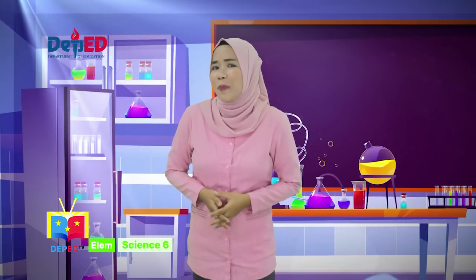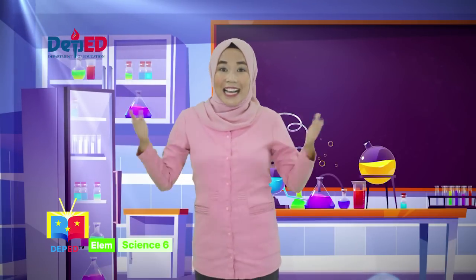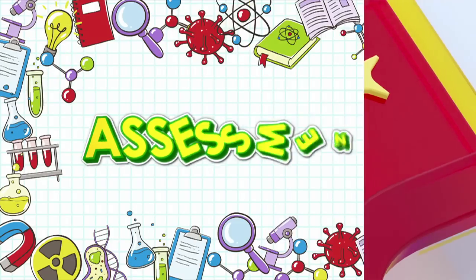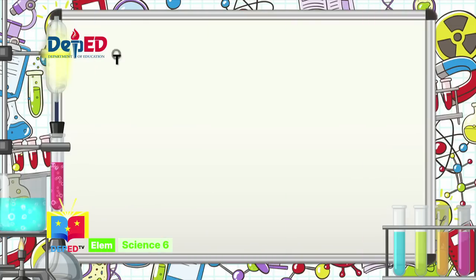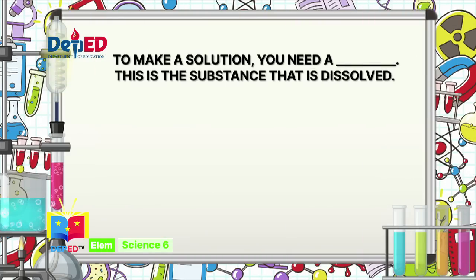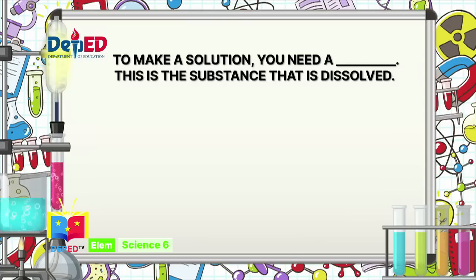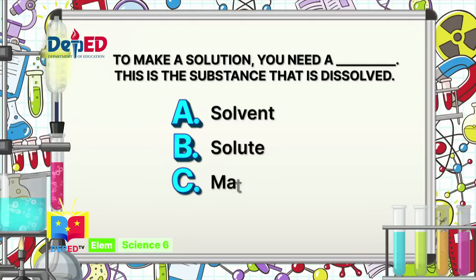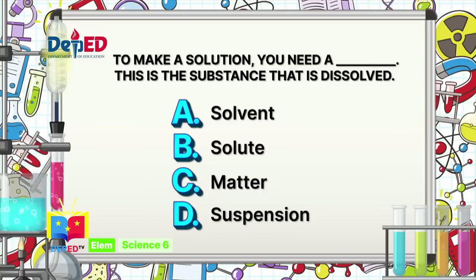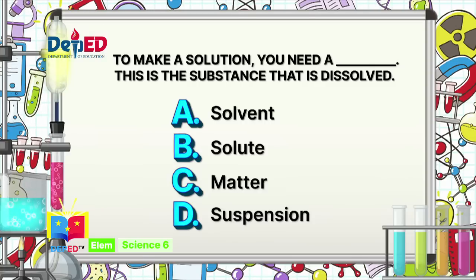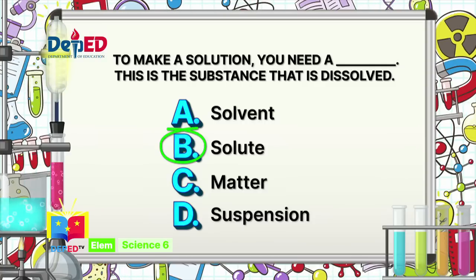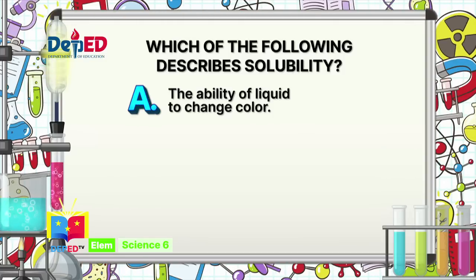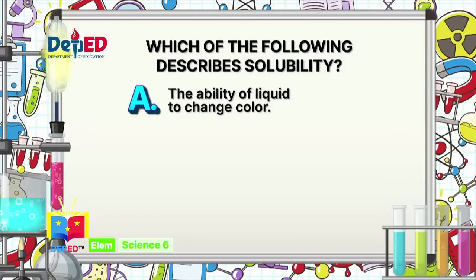I'm so happy that you have learned something from our episode. I hope that what you've learned you will also apply, because that is what a scientist does. Science-minded learners, are you ready for our assessment? Number 1: To make a solution, you need a blank — this is the substance that gets dissolved. The correct answer is B: Solute.